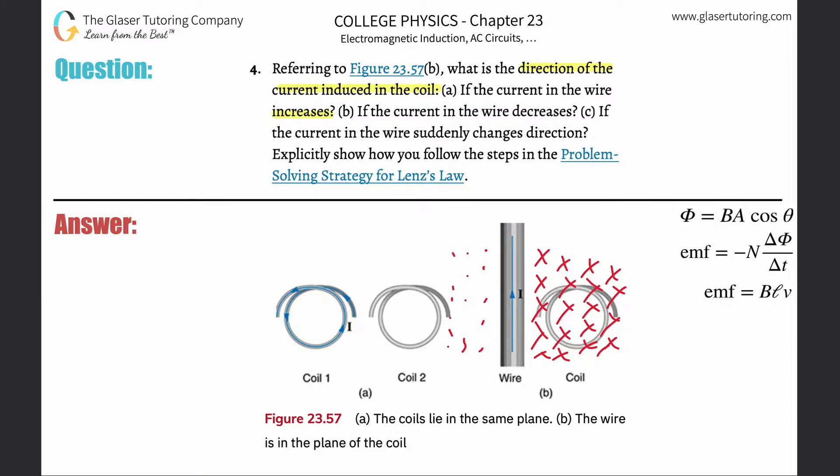Now it says if the current in the wire increases. So if this current is increasing, then what's happening to the strength of the magnetic field that it is producing? They're going to be increasing as well. So I'm going to put more X's now, more red X's.